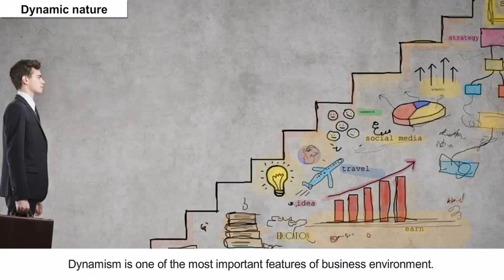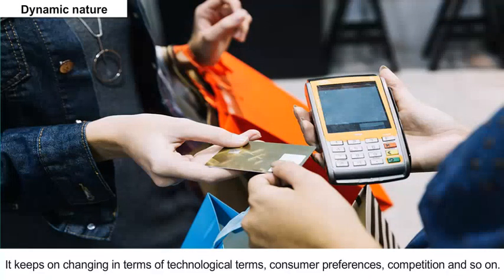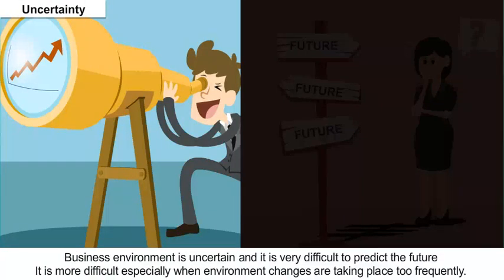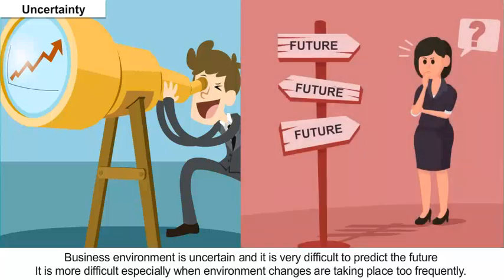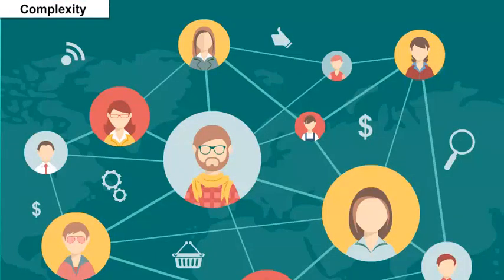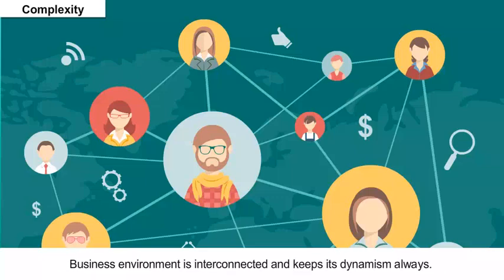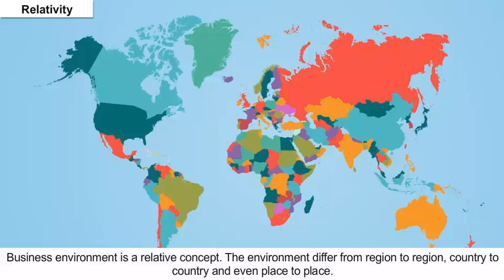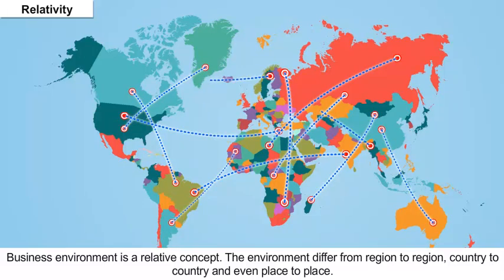Dynamism is one of the most important features of business environment. It keeps on changing in terms of technological developments, consumer preferences, competition and so on. Business environment is uncertain and it is very difficult to predict the future, especially when environment changes are taking place too frequently — as is very true in information technology or fashion industries. Business environment is also complex and relative, differing from region to region, country to country and even place to place.